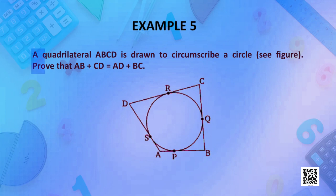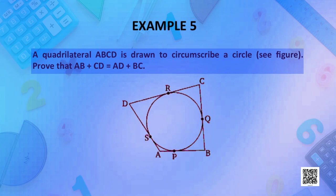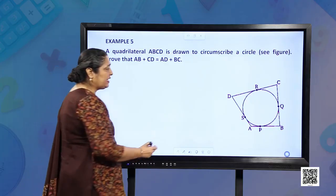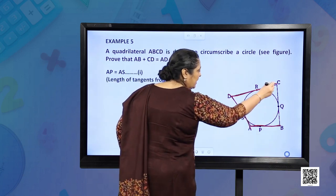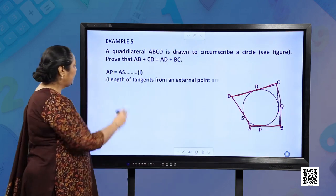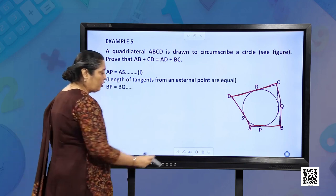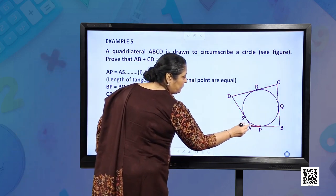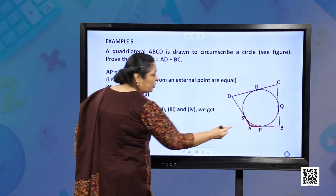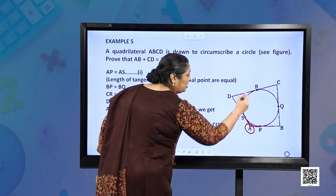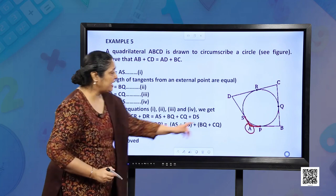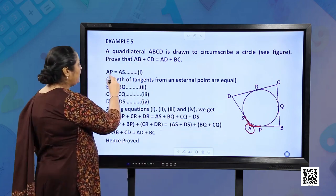Example number 5: A quadrilateral ABCD is drawn to circumscribe a circle. We have to prove that AB plus CD is equal to AD plus BC. Let us see the proof. AP is equal to AS because A is an external point and we have two tangents AP and AS on the circle.